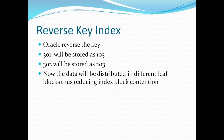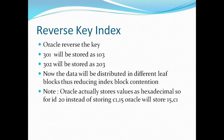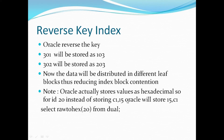That is the prime purpose of reverse key index — it is basically used to reduce the index block contention. One important thing: though I mentioned 301 will be stored as 103, that is not exactly how Oracle works. Oracle actually stores the data in hexadecimal. For example, if I am trying to store order ID 20, instead of storing it directly as 20, Oracle will store it as C1,15. In the case of a reverse key index, it reverses these two bytes and stores 15,C1. You can see the hexadecimal value using the query: SELECT RAWTOHEX(20) FROM DUAL, which gives you C1,15.